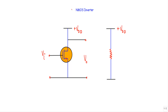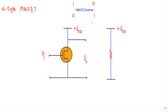In this video, I will show you the construction and logical operation of an NMOS inverter circuit. NMOS inverter means this circuit will use an N-type enhancement MOSFET. As this will be an inverter circuit, if I apply logical 1 at the input, I will get logical 0 at the output. If I apply logical 0 at the input, I will get logical 1 at the output.